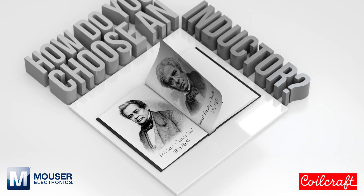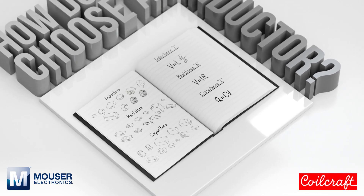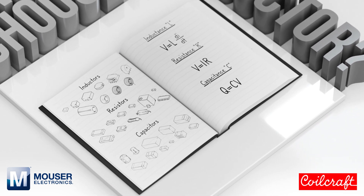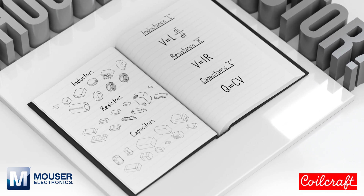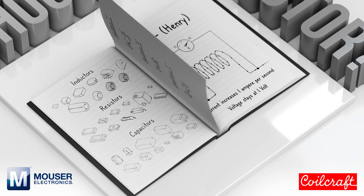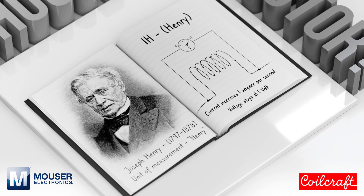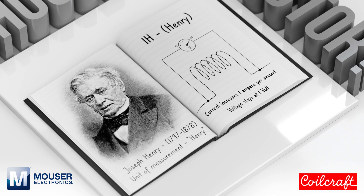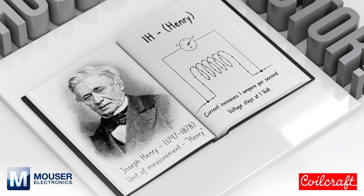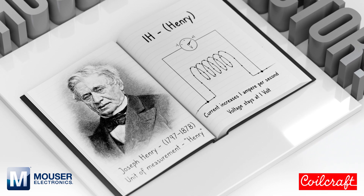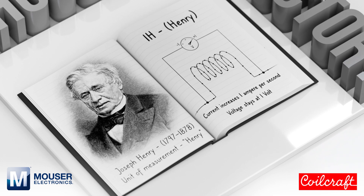An inductor is primarily measured by its inductance, similar to a resistor by its resistance or a capacitor by its capacitance. Inductance is measured in Henrys, or H, named after the 19th century scientist Joseph Henry. One Henry is the amount of inductance needed to induce one volt when the current in a coil changes at a rate of one amp per second.